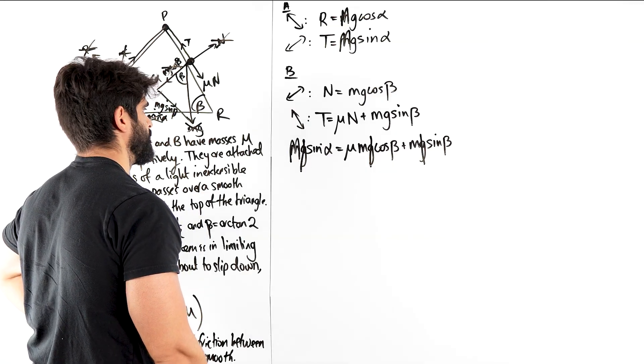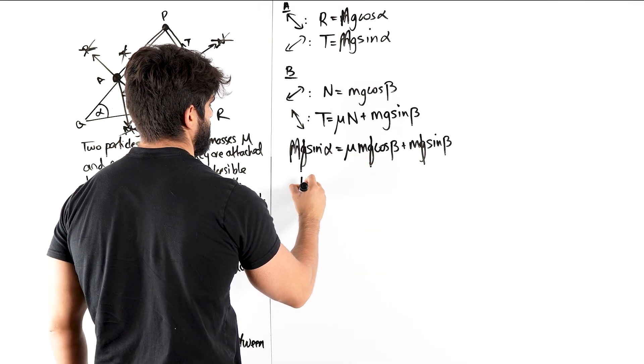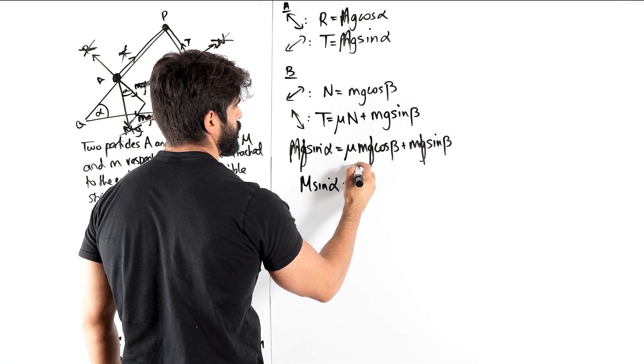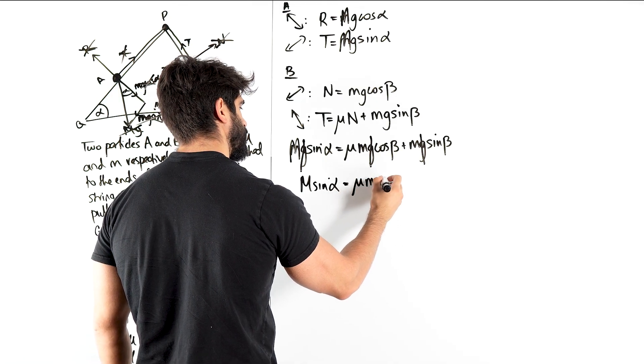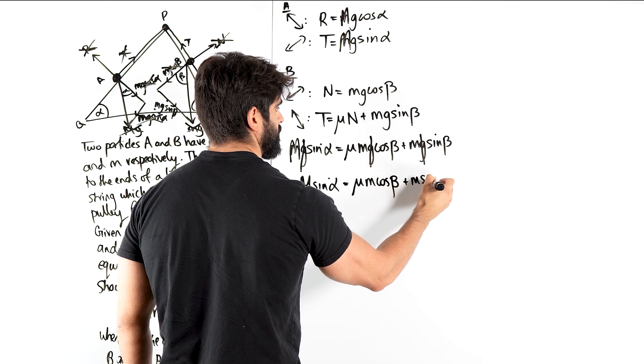Should we divide through by sin? No, definitely not. So you have M sin alpha, I thought all the angles were the same. It's mu cos beta, mu M cos beta plus M sin beta.